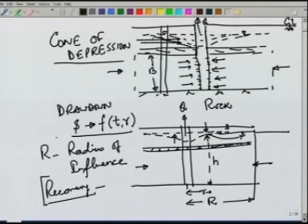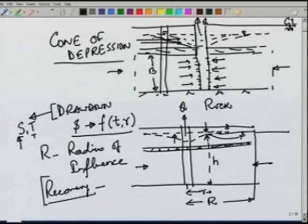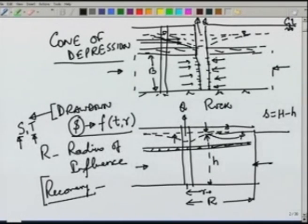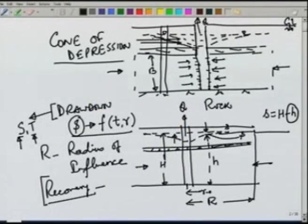So we have drawdown, in which pumping lowers the piezometric head, and once we stop pumping, the piezometric head tries to return to its initial level — that is called recovery. If we measure the drawdown, it depends on the aquifer properties S and T. By measuring drawdown s, we can estimate the parameters S (storage coefficient) and T (transmissivity) from the observed drawdown values.